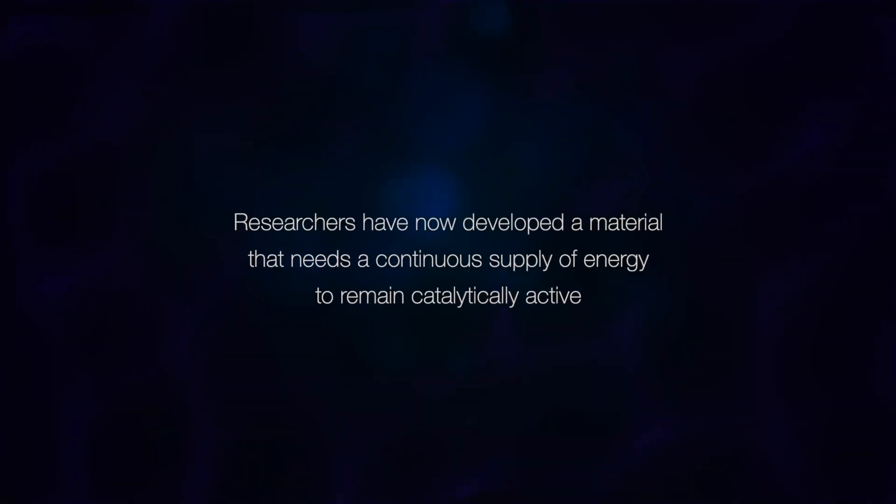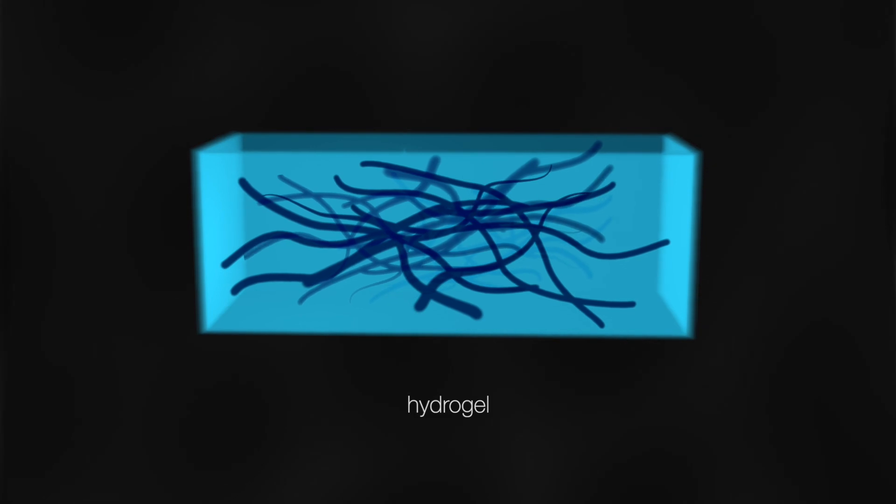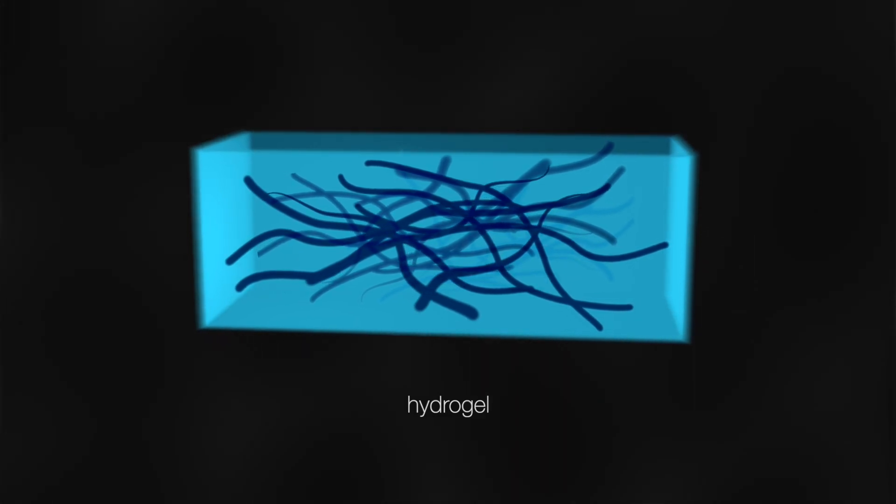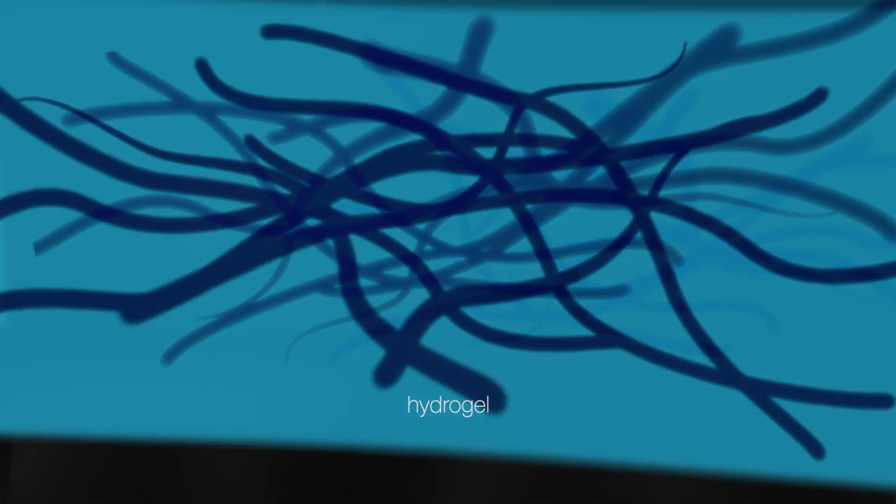Researchers have now developed a material that needs a continuous supply of energy to remain catalytically active. A hydrogel is a three-dimensional network of polymers that contains a large amount of water. Hydrogels were prepared containing three components.